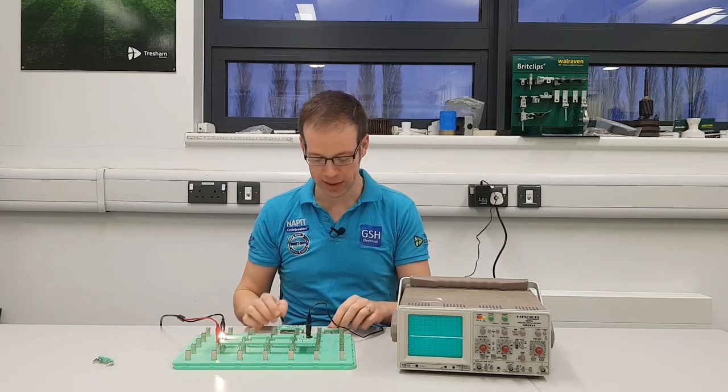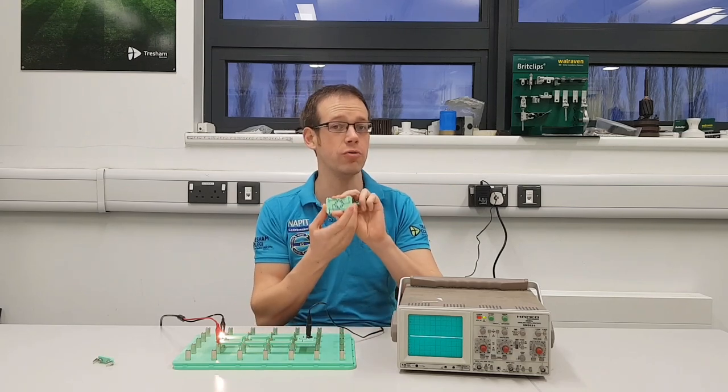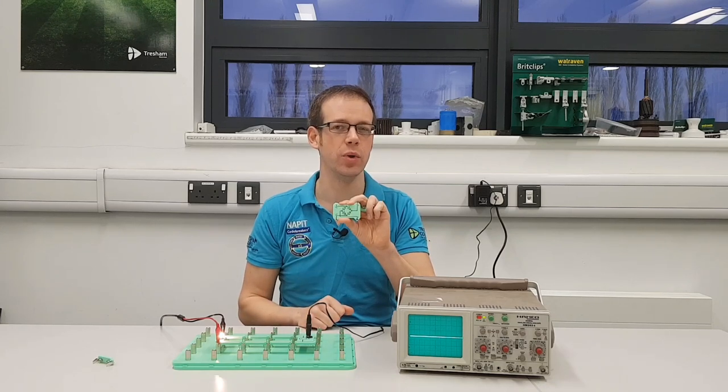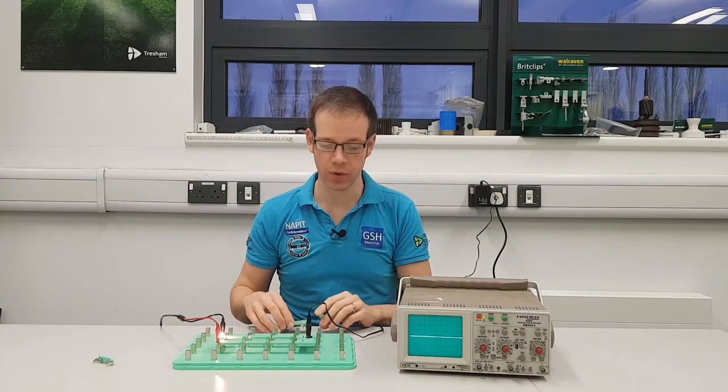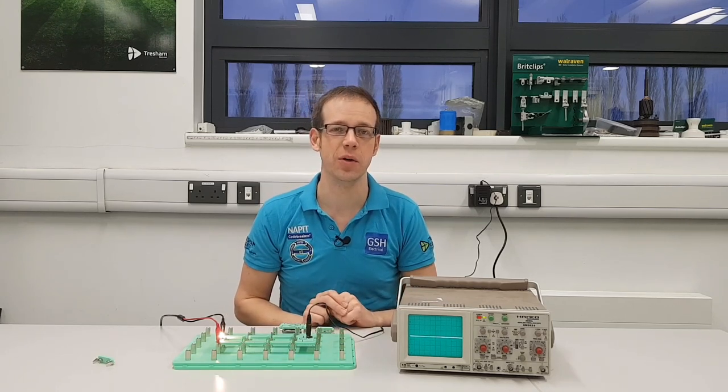So we're going to be looking at how we change this diode, how we connect them together to form what's called a bridge rectifier. We're going to have a look at the circuit for that and make sure that we understand how this is working. So we'll bring the camera in, we'll set up our oscilloscope, we'll set up our circuit and we'll have a look at how this is going to work.